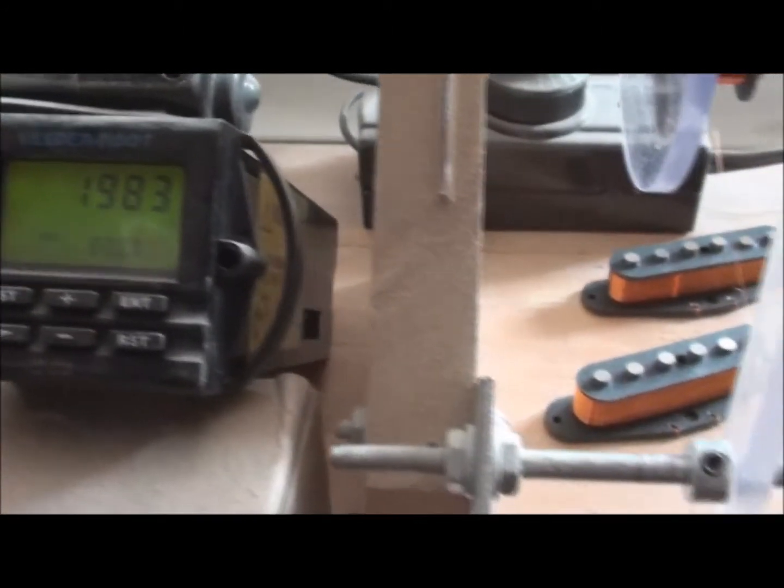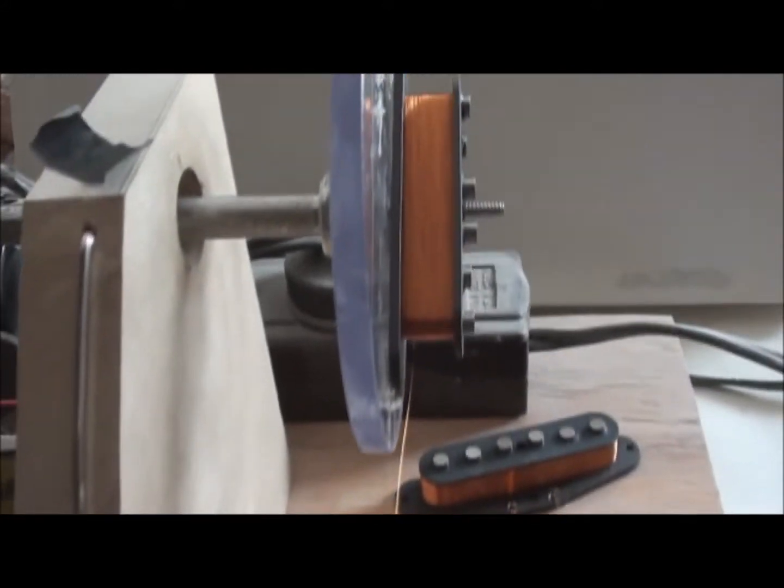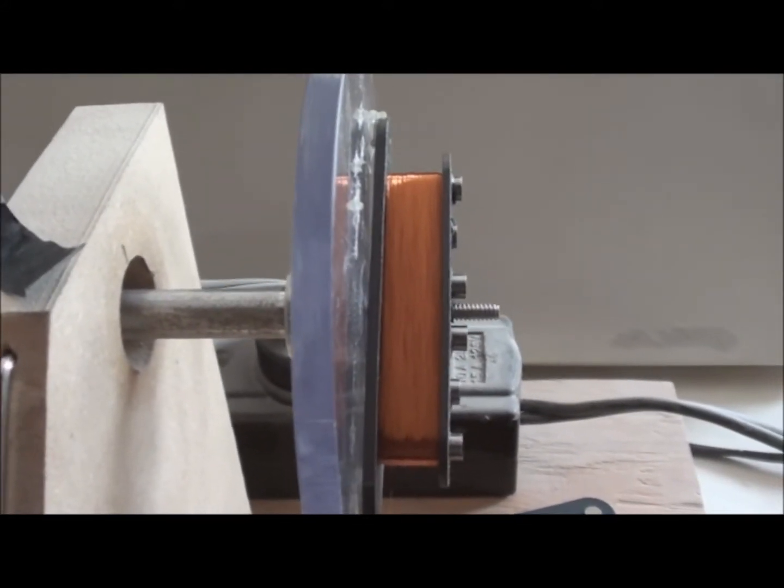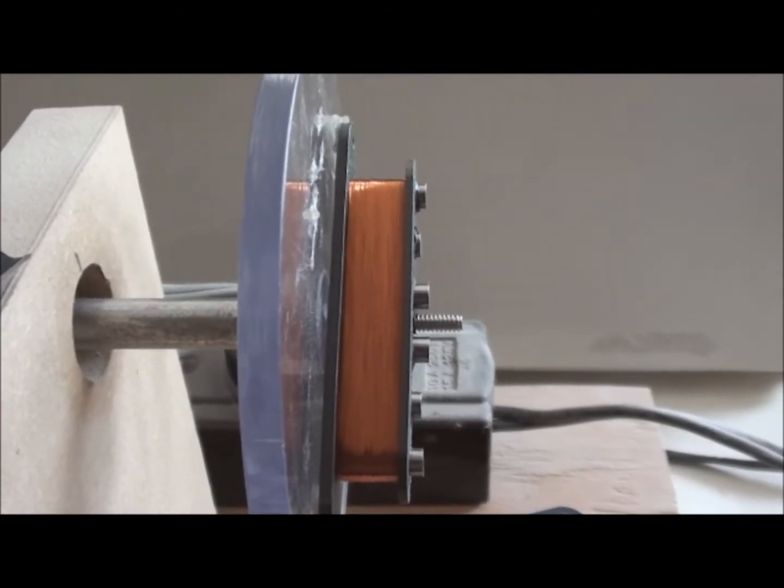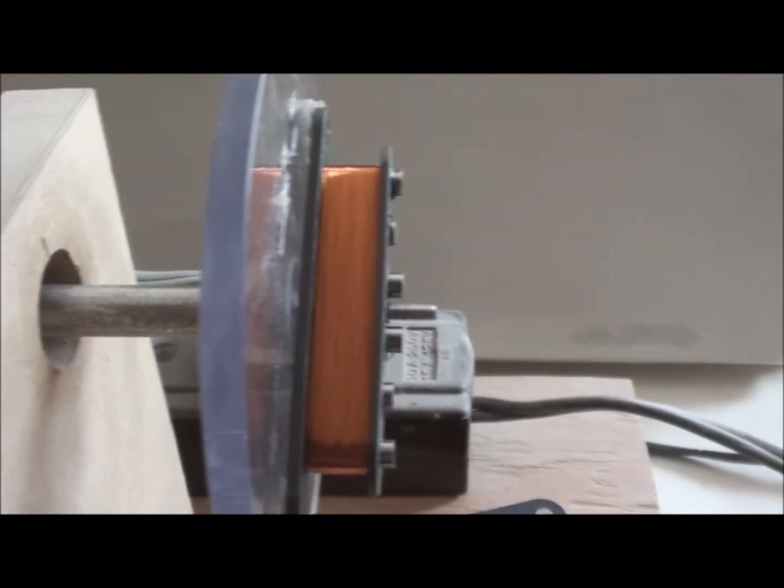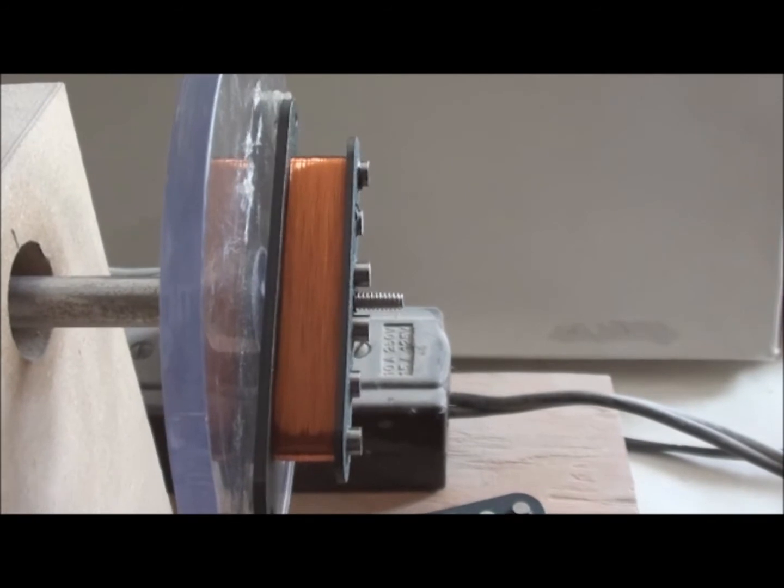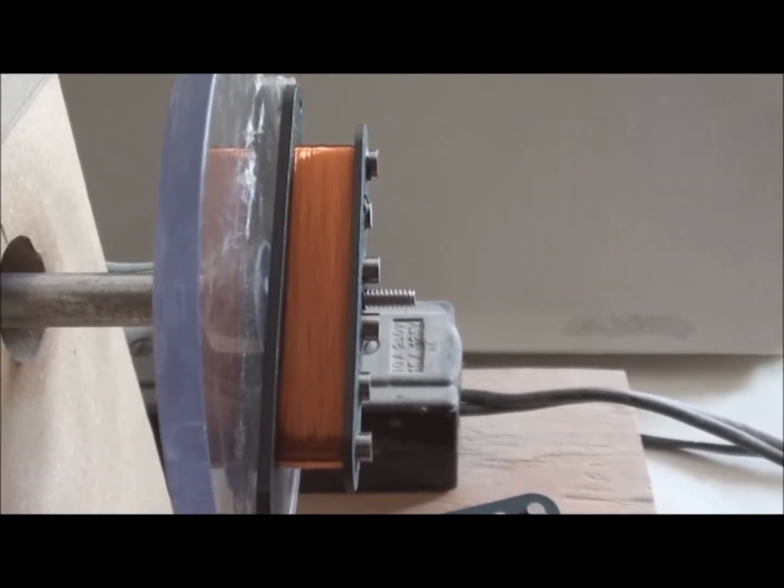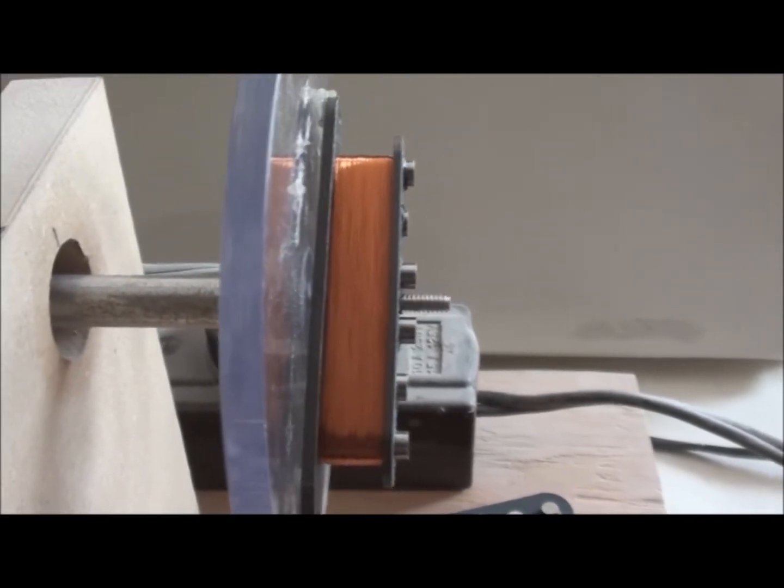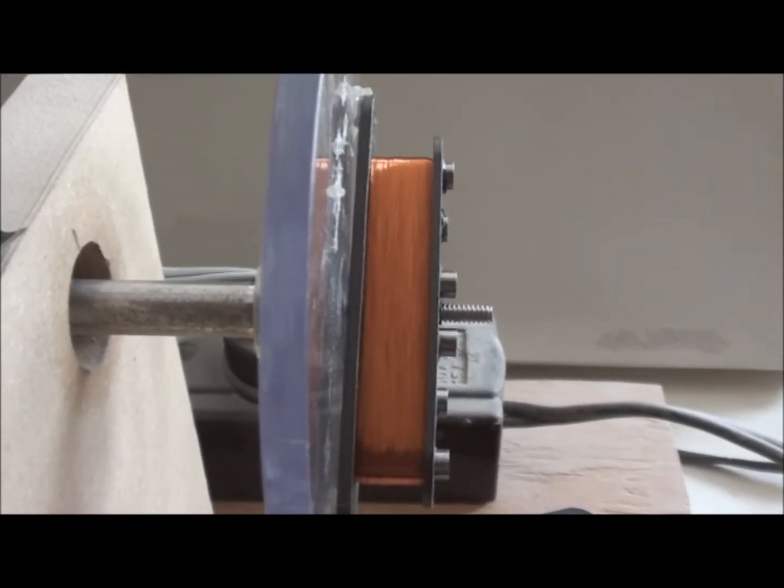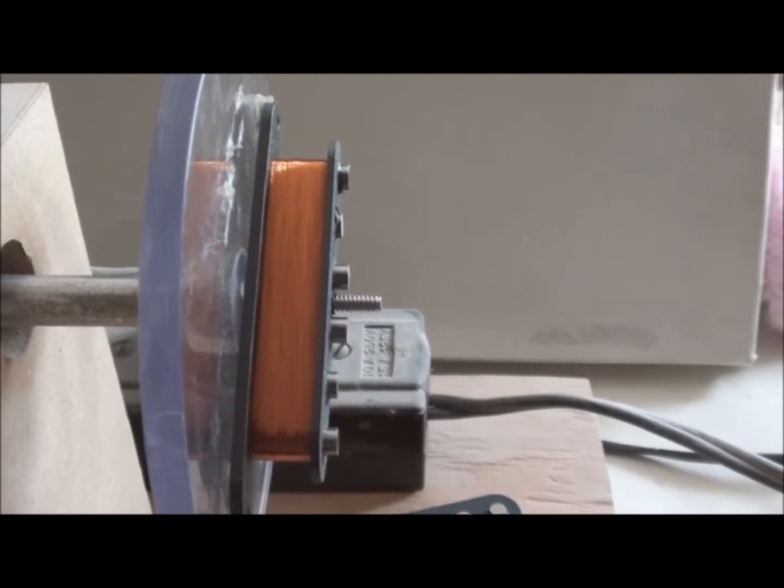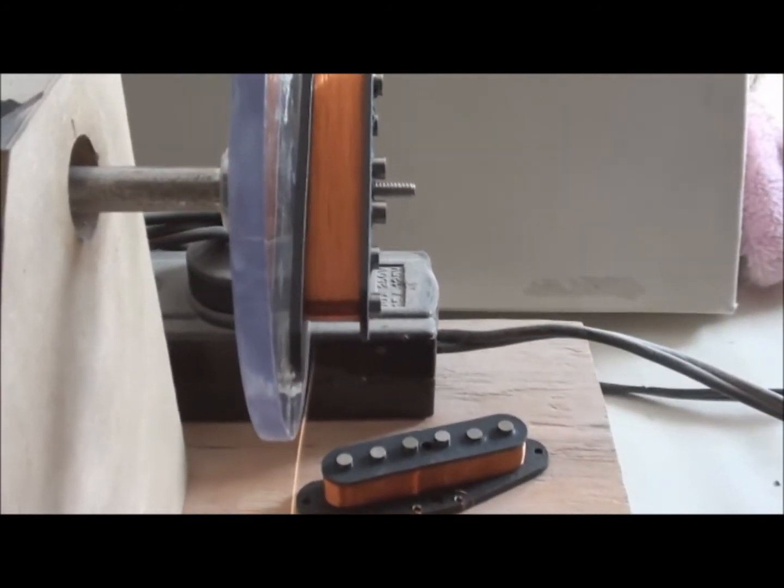Alright, so we're just under 2,000 wraps and she's laying out really nicely. I'm finding that if you go too slow, you're not going to get a really nice lay of the pickup wire. If you go too fast, you're going to run into the issue of stretching your coil wire and then increasing resistance, which throws off your target.